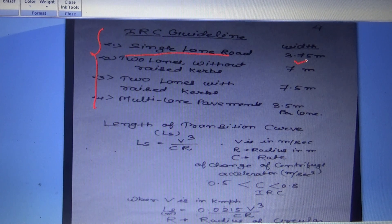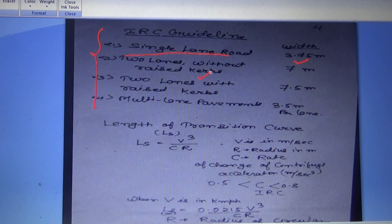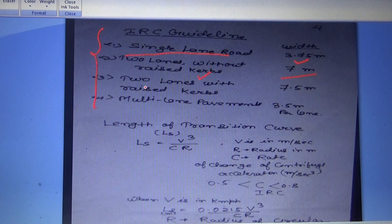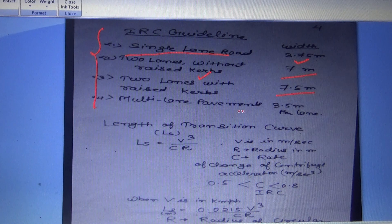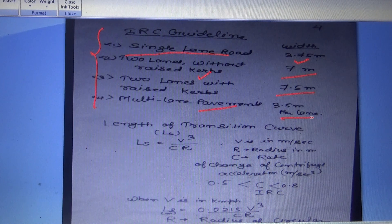Standard road width values: single lane road width is 3.75 m; two-lane roads without raised curb is 7 m; two lanes with raised curb is 7.5 m; and multi-lane pavements are 3.5 m per lane.